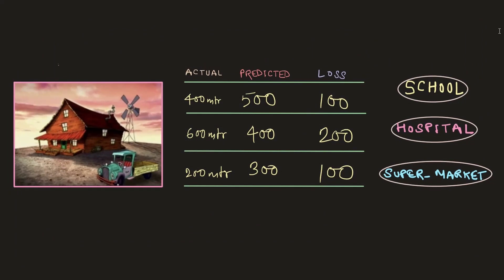A lot of you will be familiar with this famous looking house over here, and here we have three respective columns that has actual values, predicted values, and a loss column. Let's start first with the actual values which is representing nothing but the distance from this house to school, hospital, and supermarket respectively, which is 400 meters, 600 meters, and 200 meters.